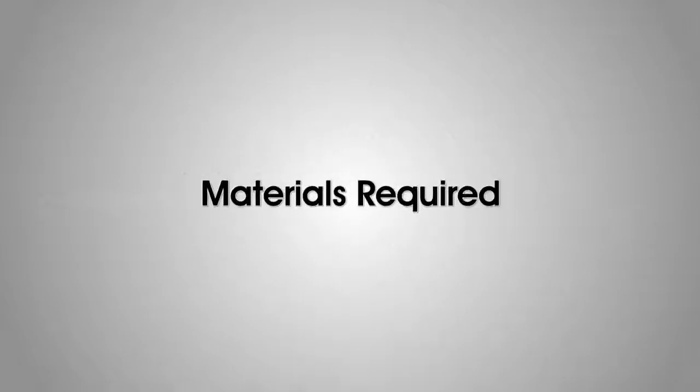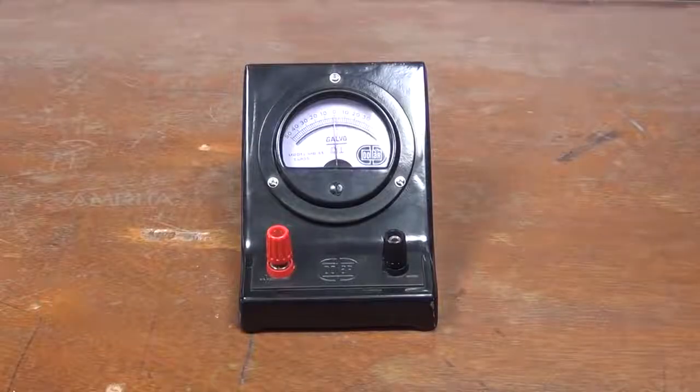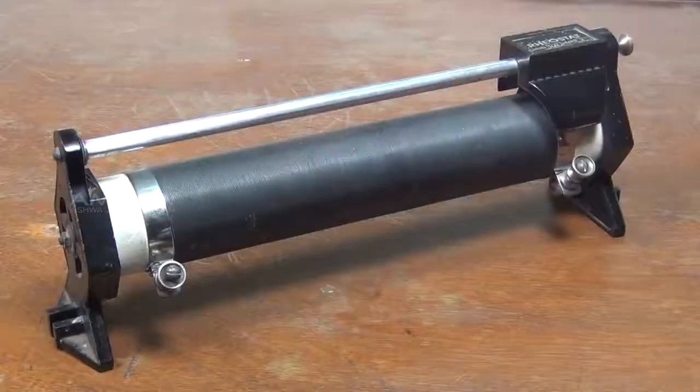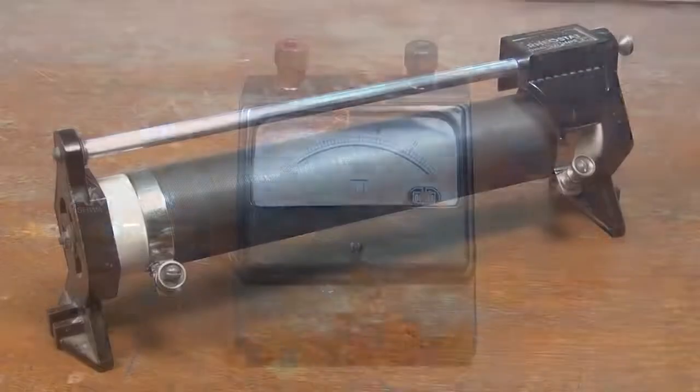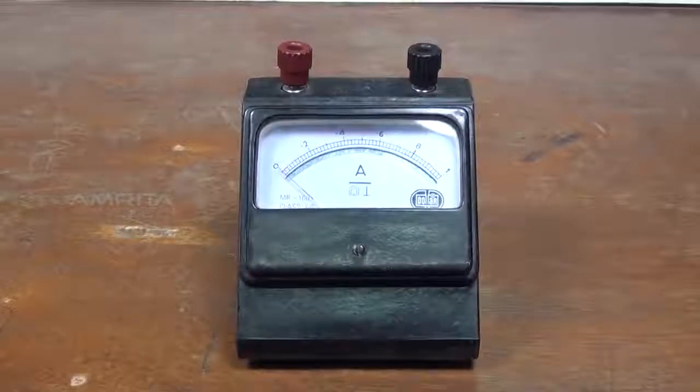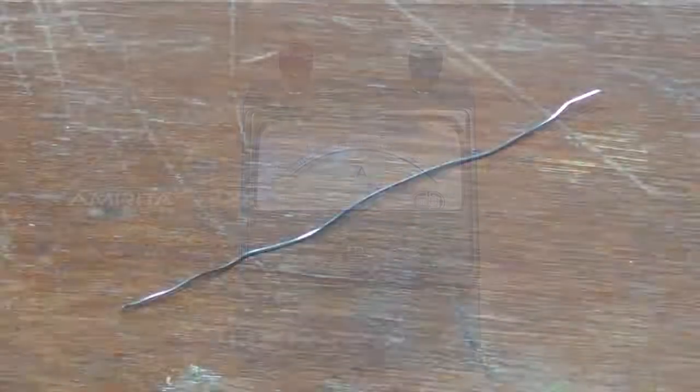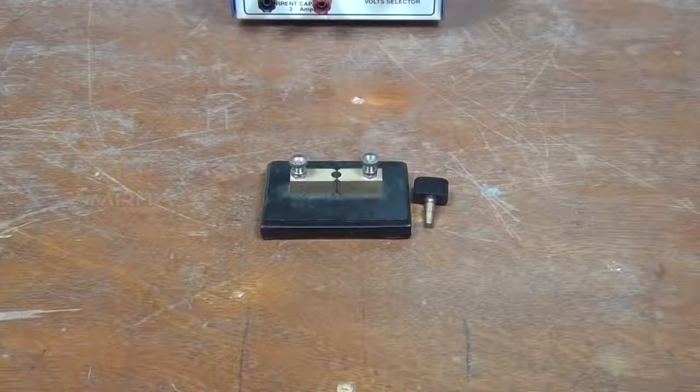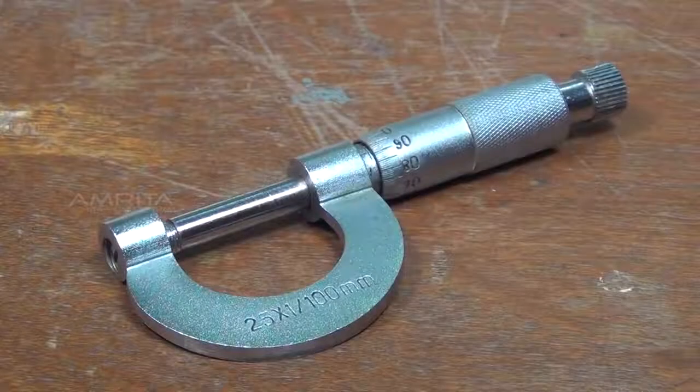Materials required: Galvanometer, cell, rheostat, ammeter of desired range, resistance wire, key, and screw gauge.